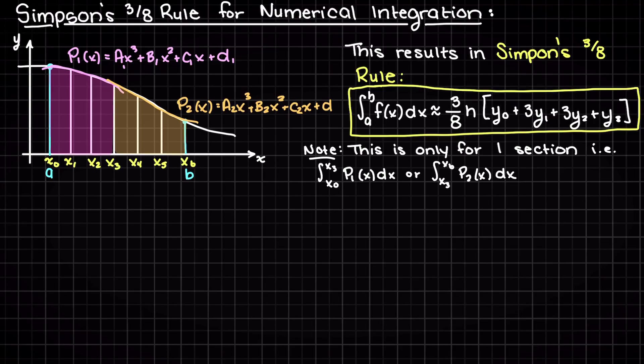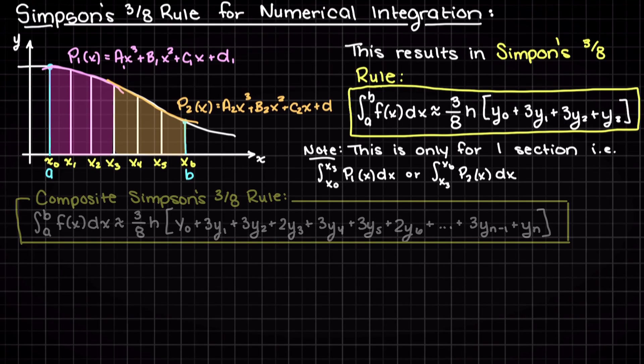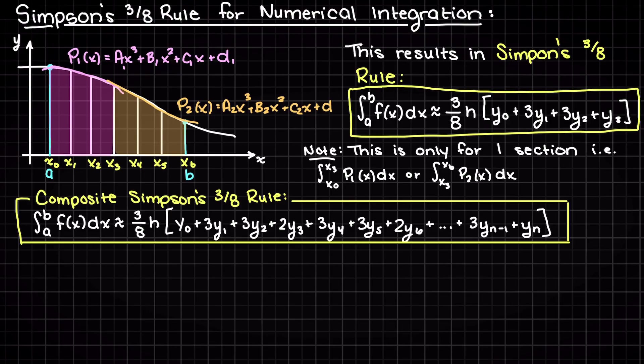However, more commonly, we would be integrating multiple subsections at a time. So how do we do this? Well, this is called the composite Simpson's 3/8 rule, or just sometimes Simpson's 3/8 rule, and that looks like this.